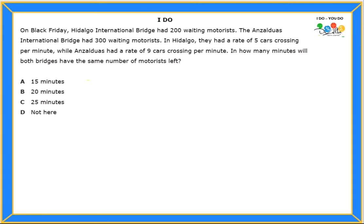Hello students, let's read the problem. It says on Black Friday, Hidalgo International Bridge had 200 waiting motorists. The Ansel Duas International Bridge had 300 waiting motorists. In Hidalgo, they had a rate of five cars crossing per minute, while Ansel Duas had a rate of nine cars crossing per minute. In how many minutes will both bridges have the same number of motorists left?